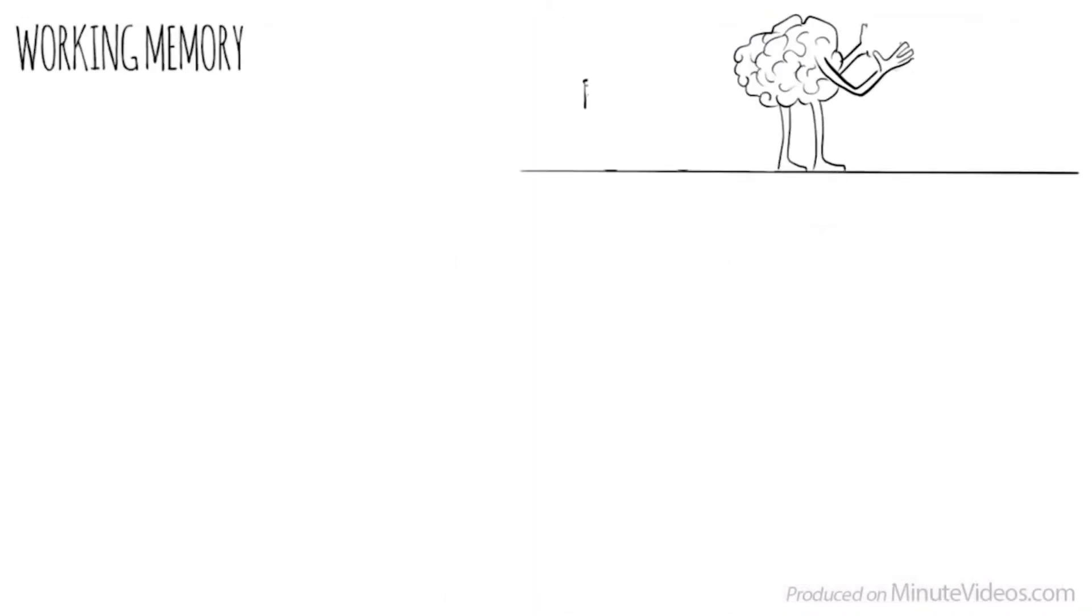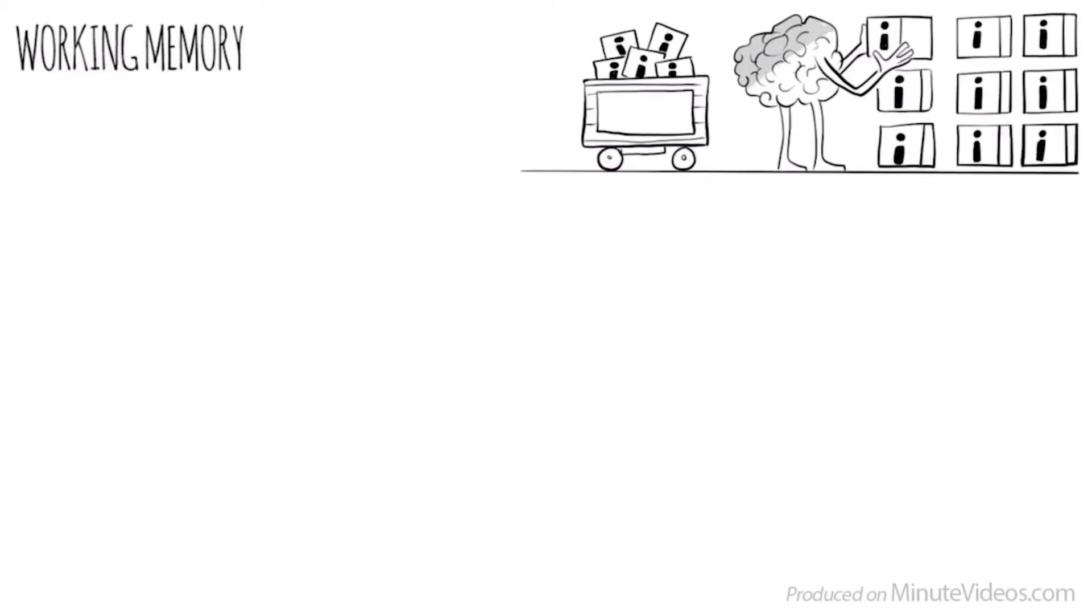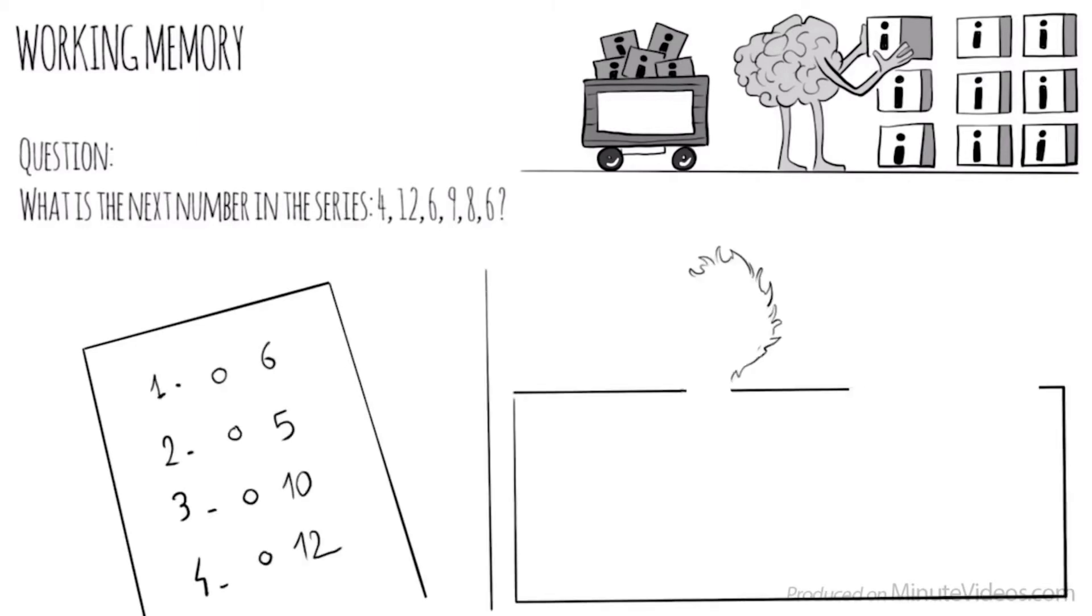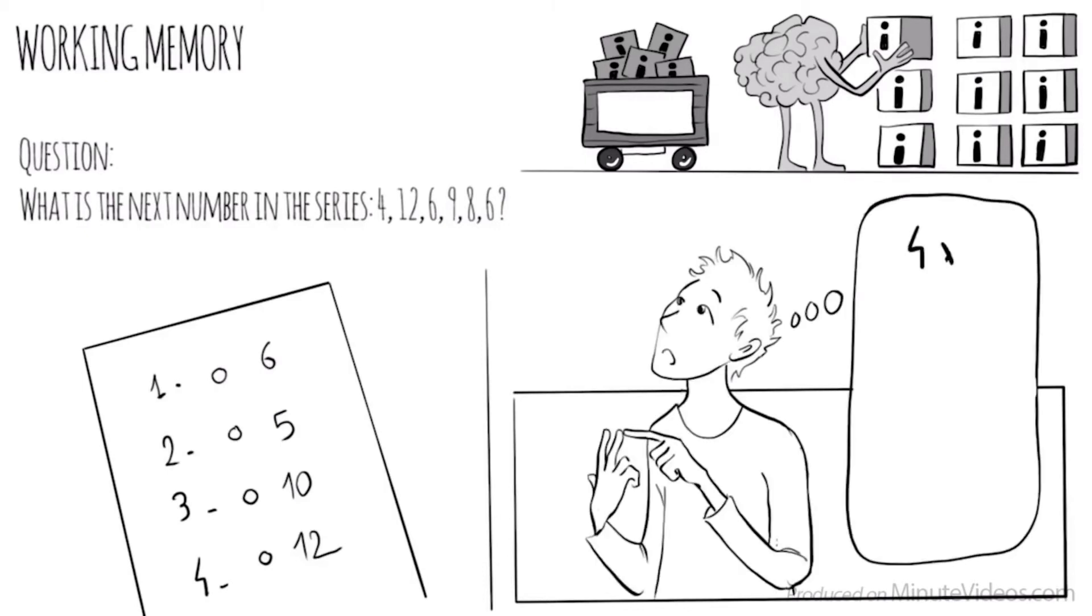The second section was about working memory, our ability to keep several chunks of information in our mind simultaneously. One of the questions was, What is the next number in the series? 4, 12, 6, 9, 8, 6. There were four options: 6, 5, 10, or 12. The trick here was to put all the digits in my head and look for a pattern. 4, X, 6, X, 8, X. Which means the next would be 10.